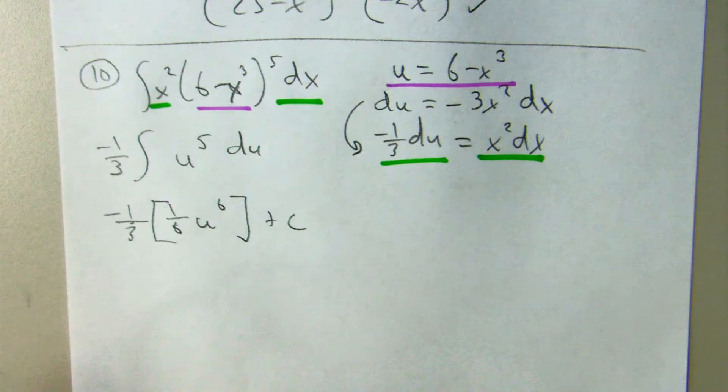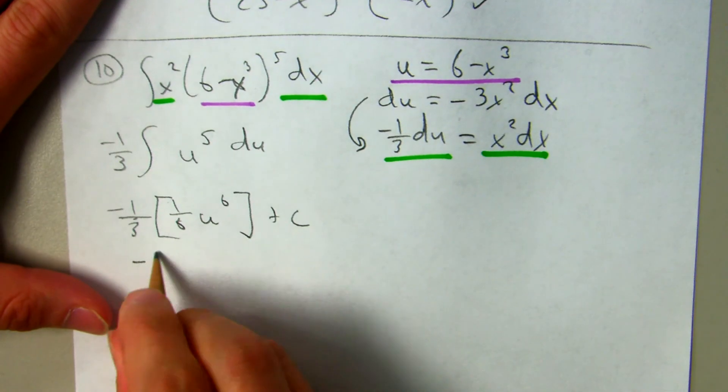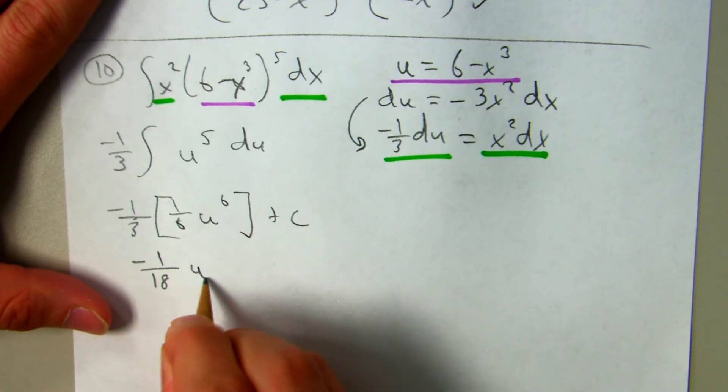The plus C is inside the parentheses, but it doesn't matter. It's not going to affect the solution anyway. Multiply these, negative one eighteenth, u to the sixth.